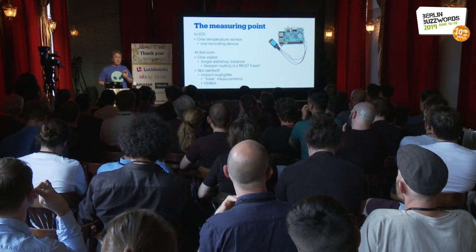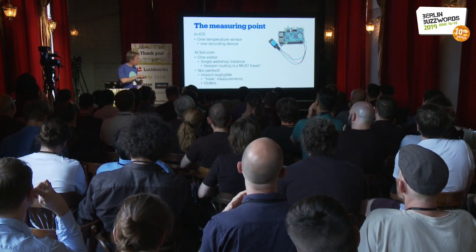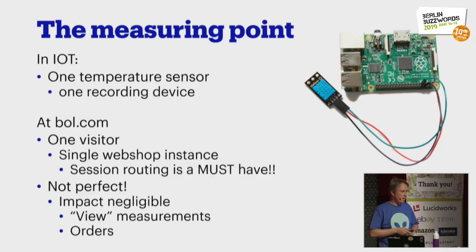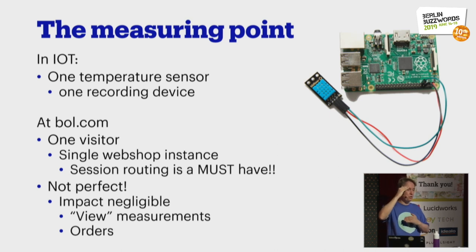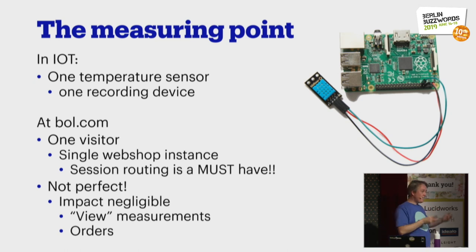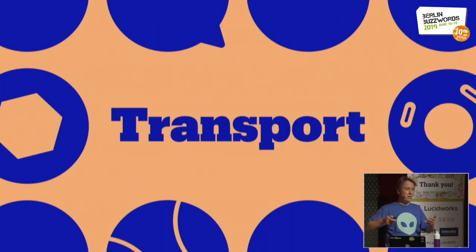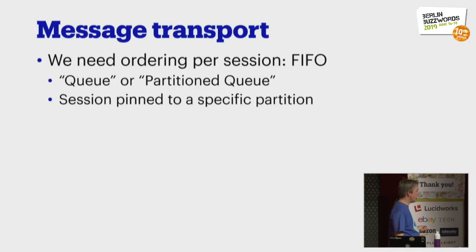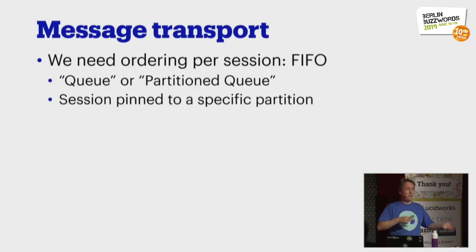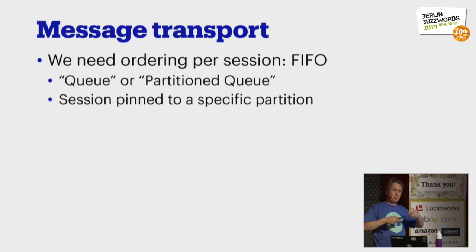The impact of imperfections in this approach is negligible, because it only affects the view measurements — which parts of the page are actually shown on screen — and the orders. Now we have neatly ordered measurements and we need to transport them in such a way that our processing stack can handle them. We need ordering: first in, first out. People call that a queue, or in some cases a partition queue, where you pin a specific session to a specific partition to maintain the ordering.